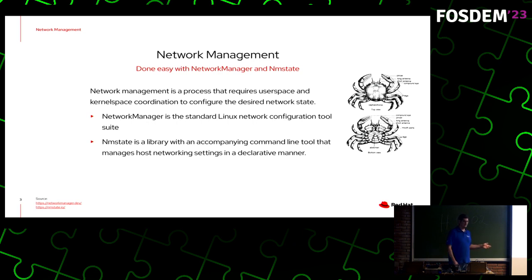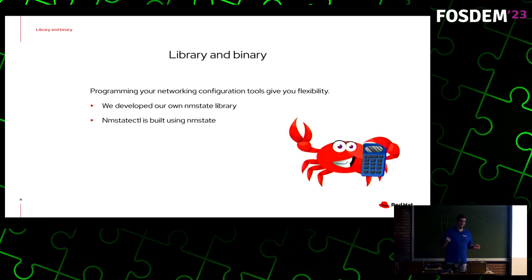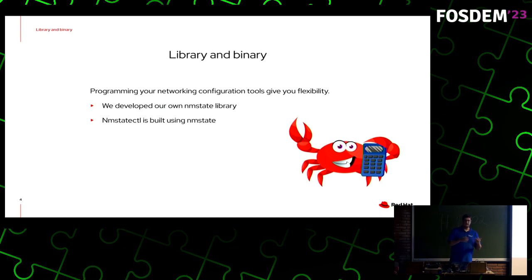As I said, we started to build NMState in Python. One day, we noticed that a lot of our users were willing to ship a binary and not use the Python environment. There were also some performance issues because we needed to do a lot of operations. So we decided to give Rust a try. The problem was that we had a library and a binary, and we needed to move both of them to Rust. We also already had a big base of users, so we could not break them. We needed to support all the features that we already had in Python. So we created the NMState library in Rust, and also the NMState CTL command line tool.